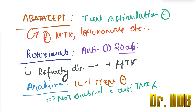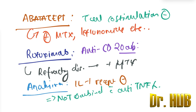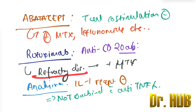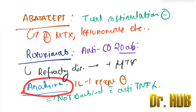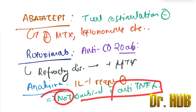To recap the biologicals: abatacept is a T cell co-stimulation inhibitor used with MTX and leflunomide. Rituximab is an anti-CD20 antibody for refractory disease in combination with methotrexate. Anakinra is an IL-1 receptor antagonist that should not be combined with anti-TNF alpha.